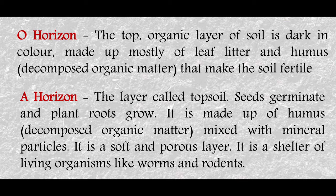In the A-horizon, seeds germinate and plant roots grow. It is made up of humus mixed with mineral particles. It is a soft and porous layer and is the shelter of living organisms like worms and other organisms. This horizon is the habitat of many soil organisms and contains organic material that makes the soil fertile.